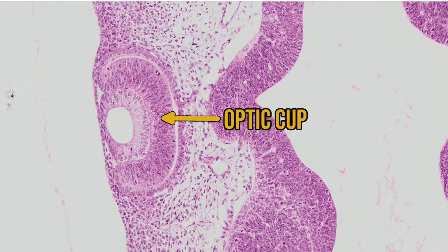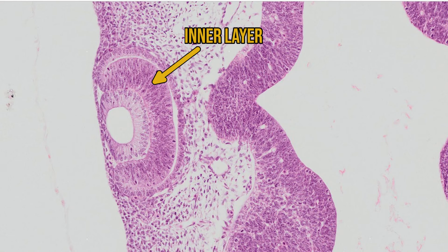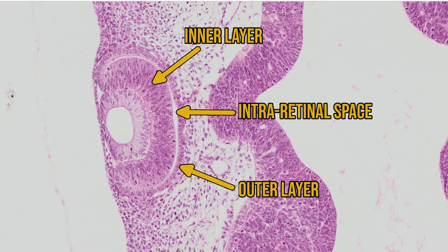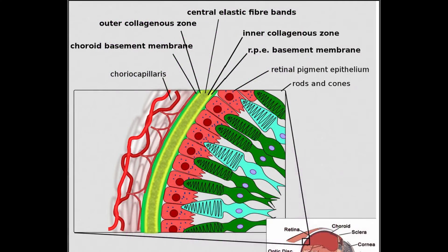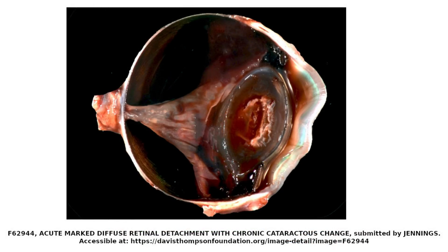Meanwhile the optic cup continues to develop. The inner layer is becoming thicker and will eventually form the neural layers of the retina, while the outer layer will form the retinal pigmented epithelium. There is still a gap between the two called the intra-retinal space. This gap never fills with strong connective tissue, and the attachment relies on interdigitation between the retinal pigmented epithelium and overlying photoreceptors — which is why the retina is prone to detachment.